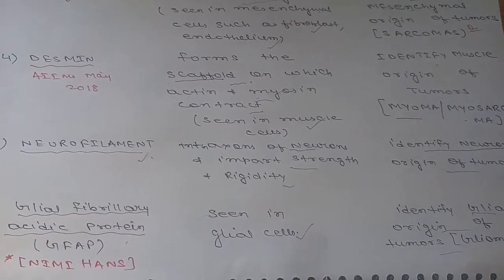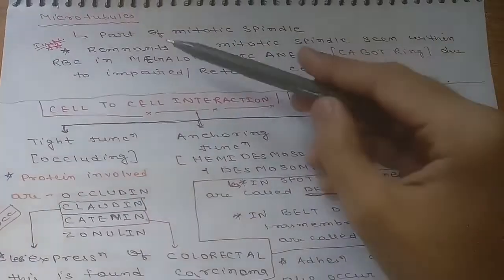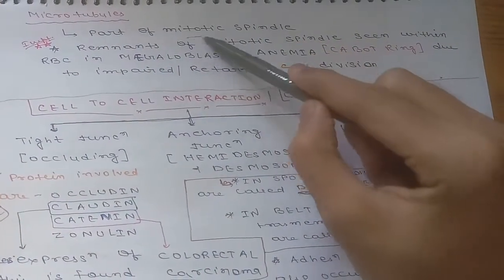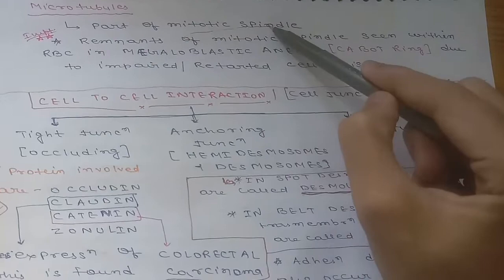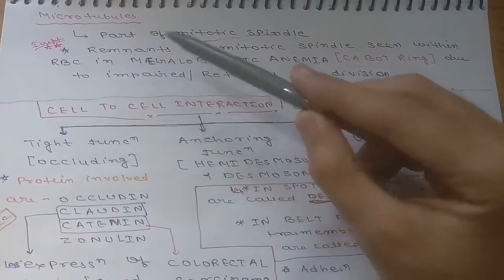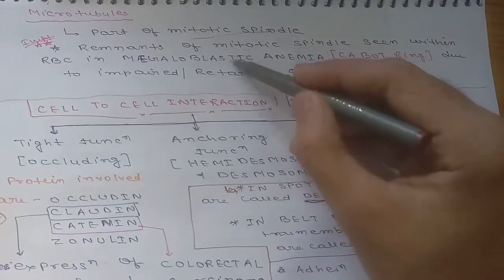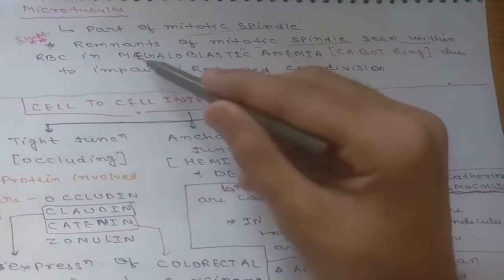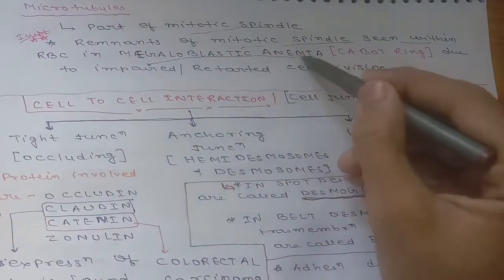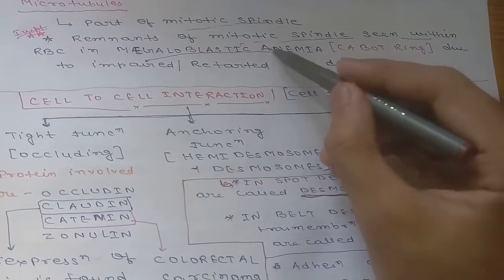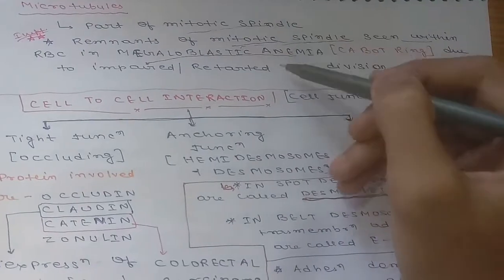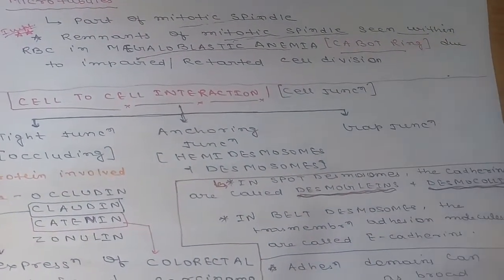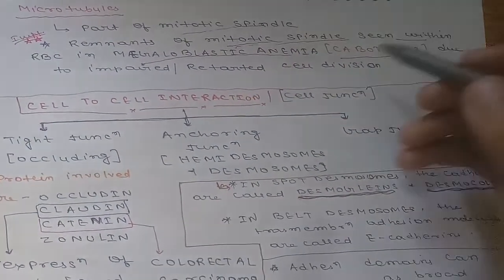Moving to the third cytoskeletal component, microtubules: they are part of the mitotic spindle. An important point is that remnants of the mitotic spindle are seen within red blood cells in megaloblastic anemia, and these remnants are known as Cabot rings.